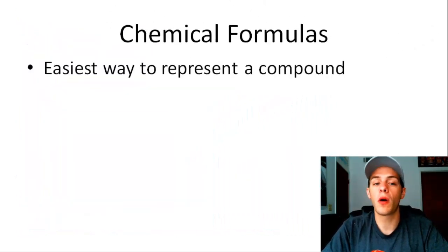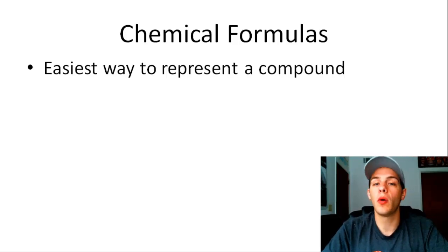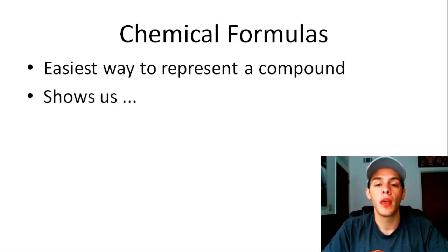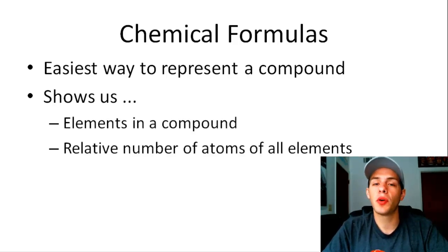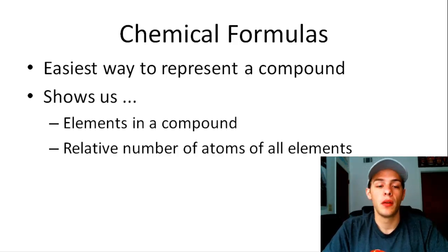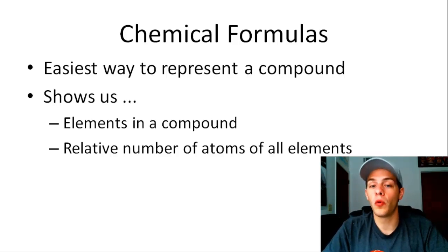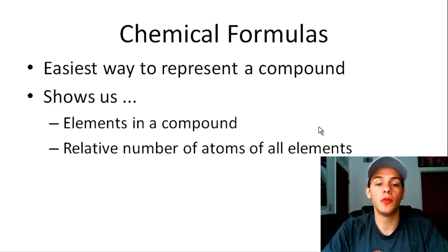Chemical formulas are by far the easiest way to represent a compound. We don't always have to name the compound — we can just use that compound's chemical formula. Chemical formulas are going to show us at least two things: first, which elements are in a compound, and second, the relative numbers of atoms of those elements in the compound.